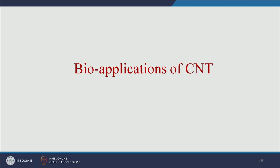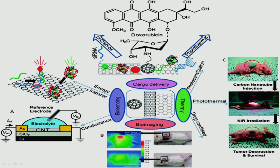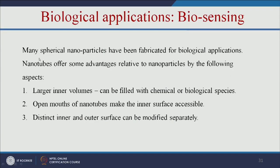Carbon nanotubes can be useful for bioimaging, drug delivery, biosensing, and therapeutic or theranostic applications. Nanotubes offer advantages over nanoparticles: larger inner volumes that can be filled with chemical or biological species such as drugs or imaging agents; open ends making the inner surface accessible; and distinct inner and outer surfaces that can be modified separately.